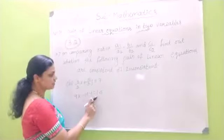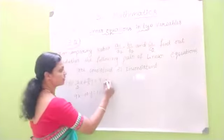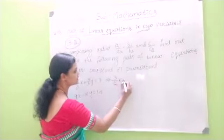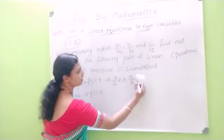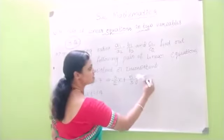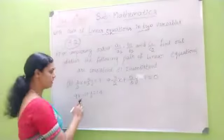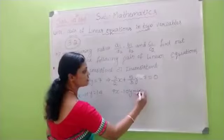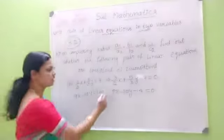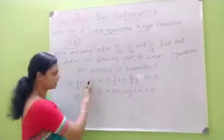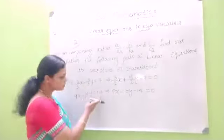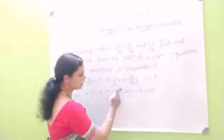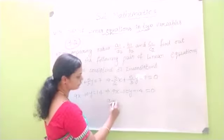The equations are: (3/2)x plus (5/3)y equal to 7, and 9x minus 10y equal to 14. We need to write these in standard form, moving everything to the left-hand side so the right-hand side is 0. So: (3/2)x plus (5/3)y minus 7 equals 0, and 9x minus 10y minus 14 equals 0.